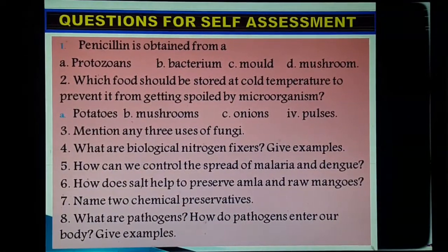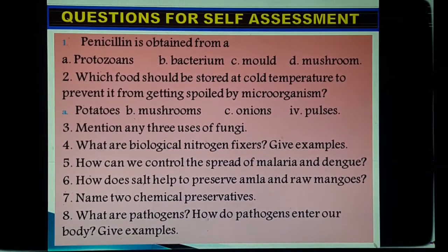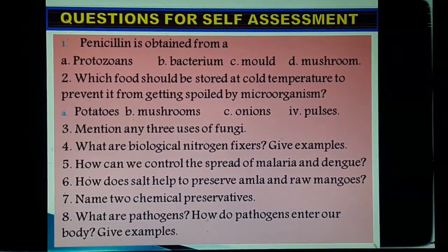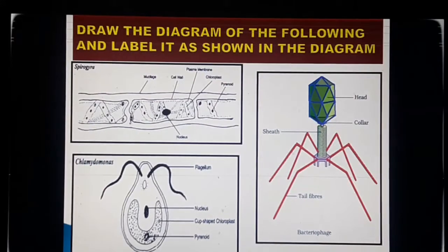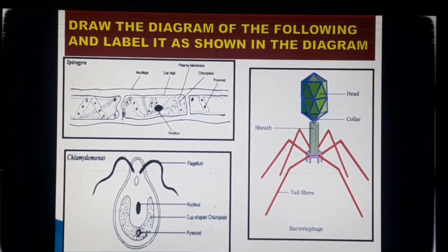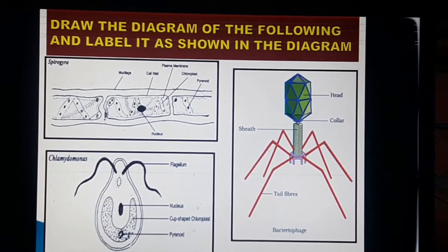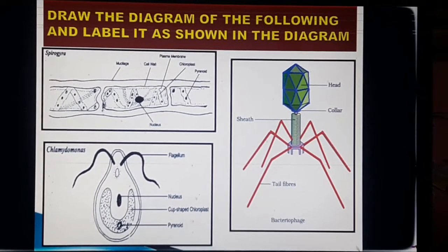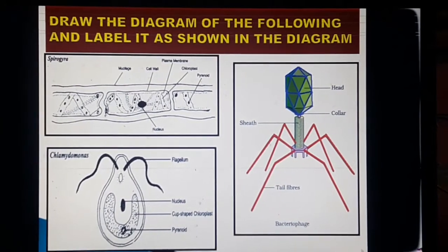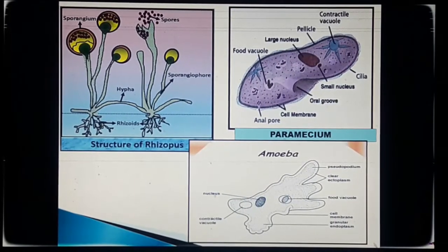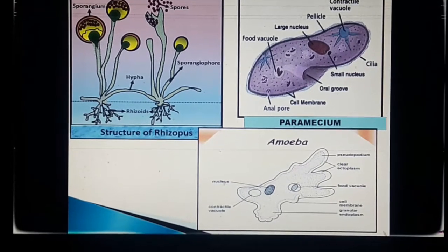Here are questions for self-assessment. You will solve these only after complete preparation of the chapter and will not copy answers from the book. There are also labelled diagrams of six microorganisms. You have to draw these diagrams and label them in your biology notebook in the white portion, using only pencils — no need to color them.